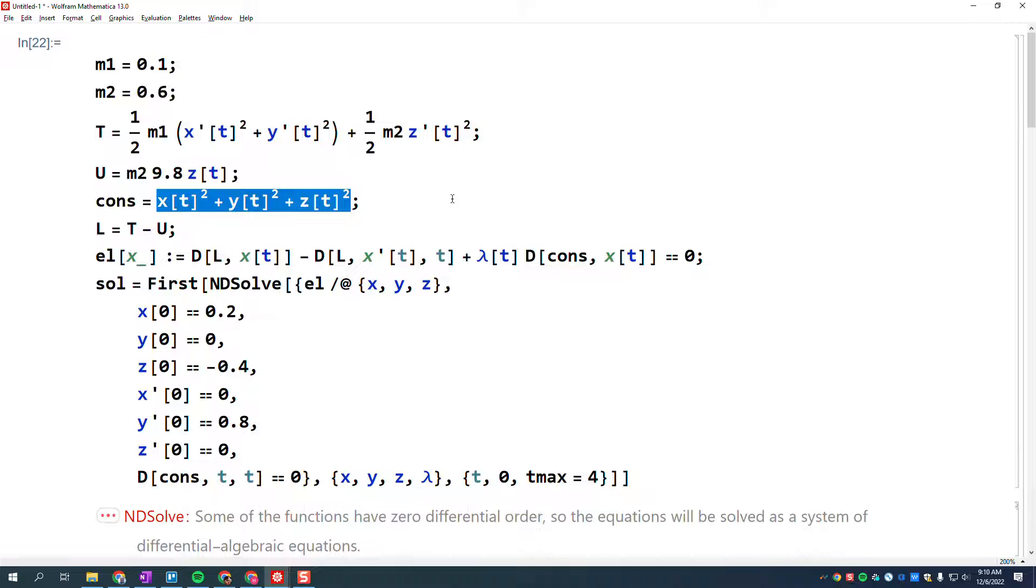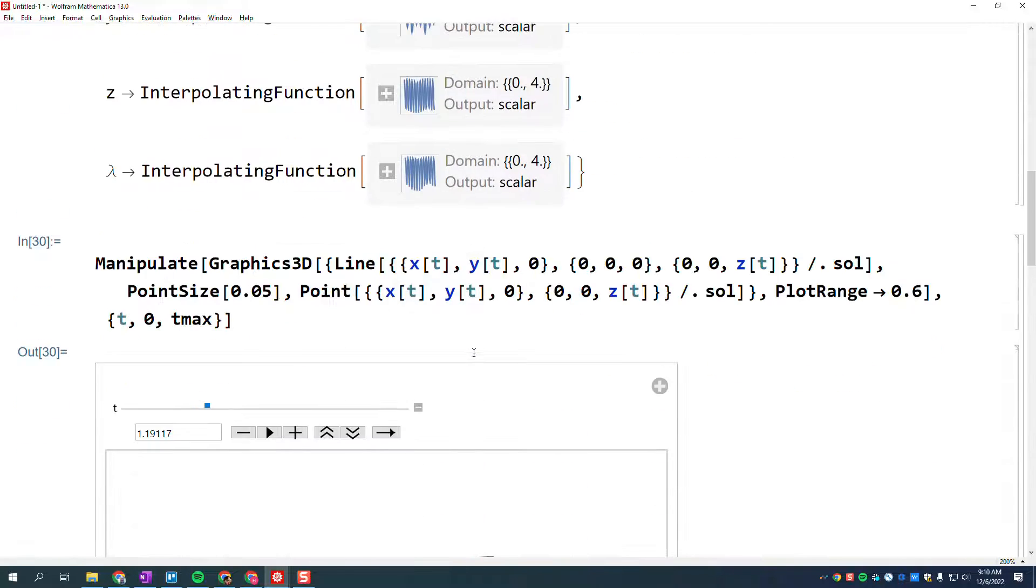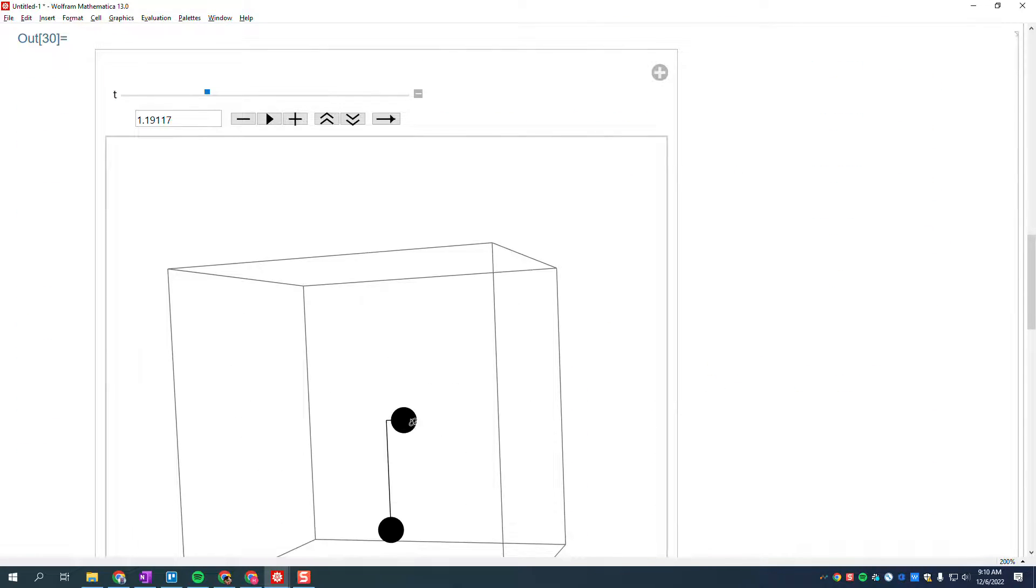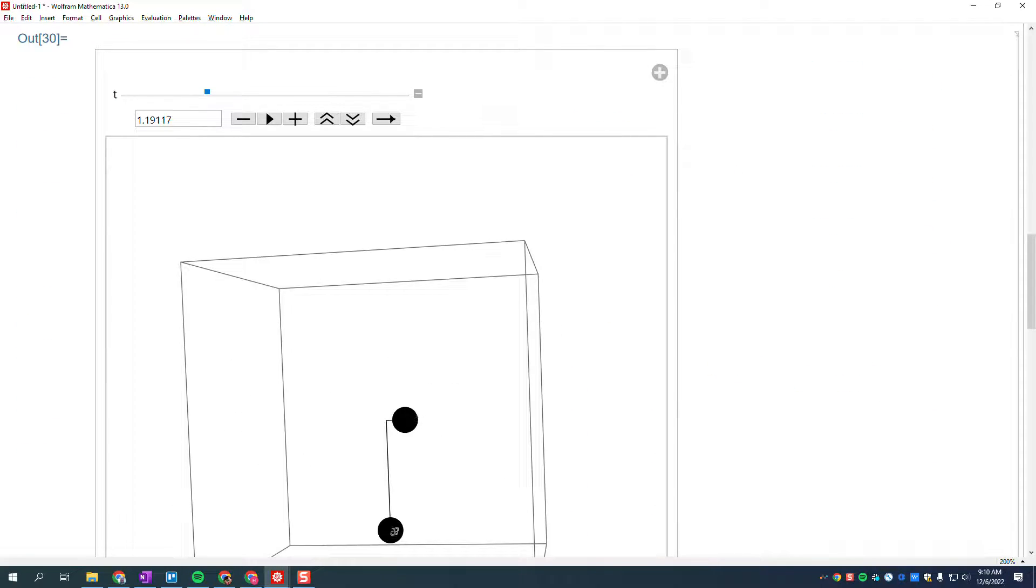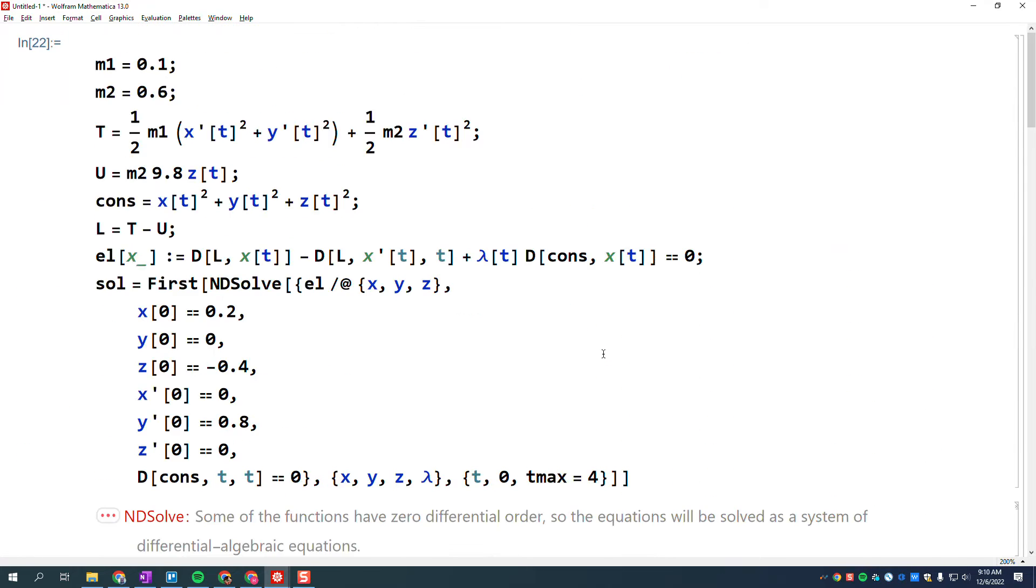Think of it as like a particle either on or glued to the inside of a sphere. So the motion which we interpret differently, we say oh well the X and Y is here and the Z is there, but apparently the motion would be identical to like the shadow of this on a sphere as it rolls around. That's actually really cool.